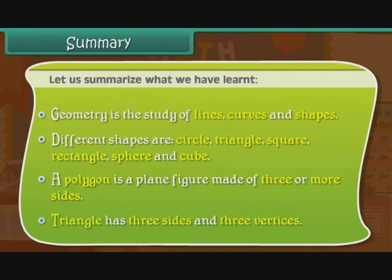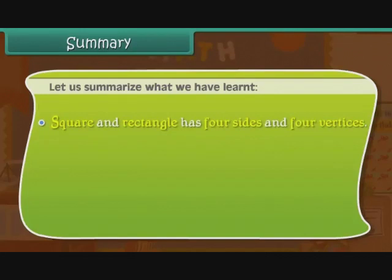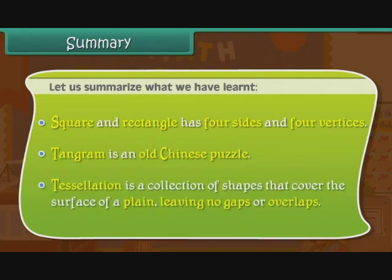Triangle has three sides and three vertices. Square and rectangle have four sides and four vertices. Tangram is an old Chinese puzzle. Tessellation is a collection of shapes that cover the surface of a plane leaving no gaps or overlaps.